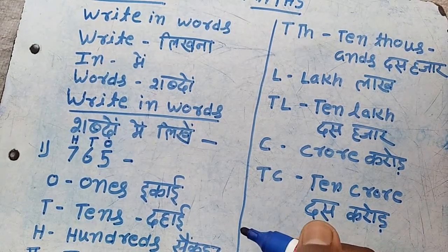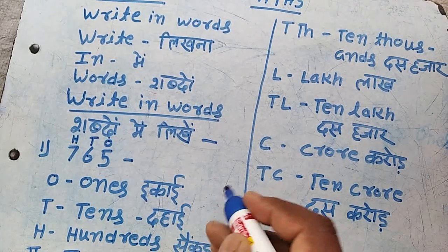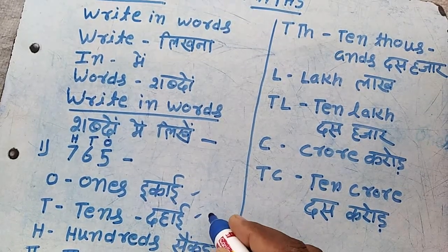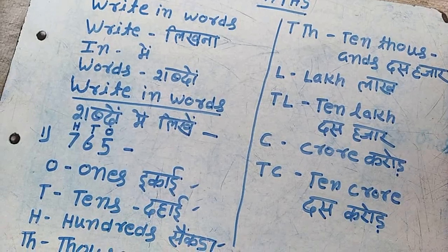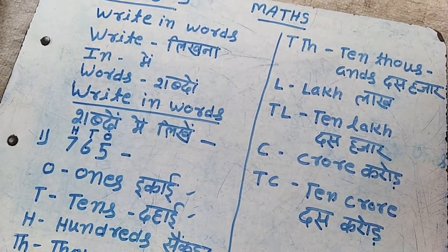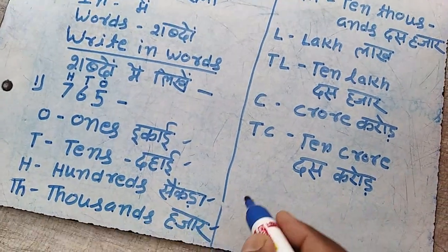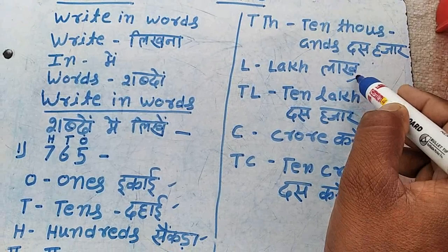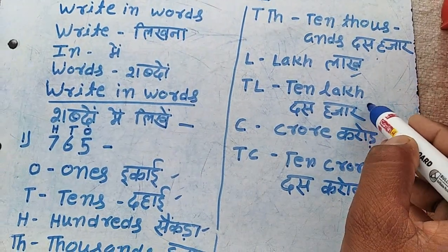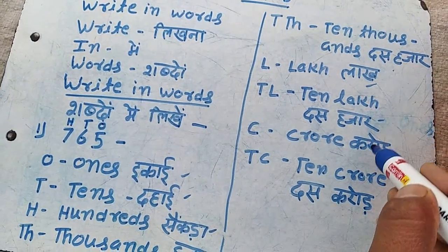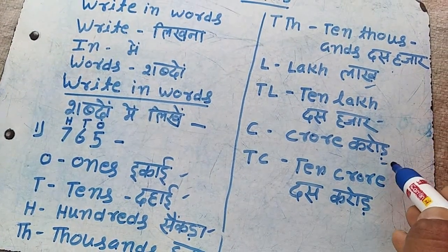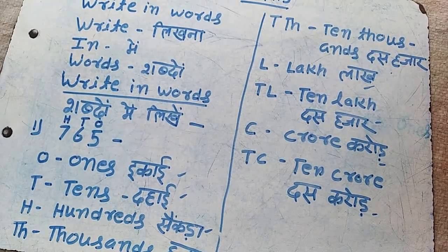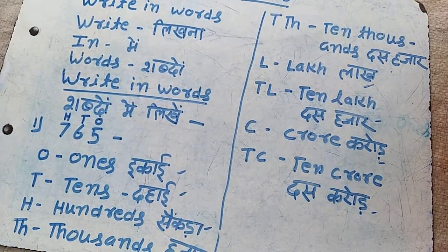To write in words: O means ones, T means tens, H means hundreds, TH means thousands, TTH means ten thousand, L means lakh, TL means ten lakh, C means crore, and TC means ten crore. This is how we will write in words.